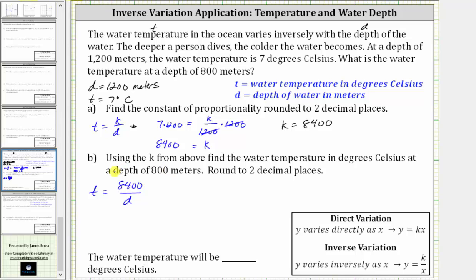we substitute 800 for D, the depth, which gives us the temperature T is equal to 8,400 divided by 800. And 8,400 divided by 800 is equal to 10.5. So now we know the water temperature will be 10.5 degrees Celsius when the depth is 800 meters.